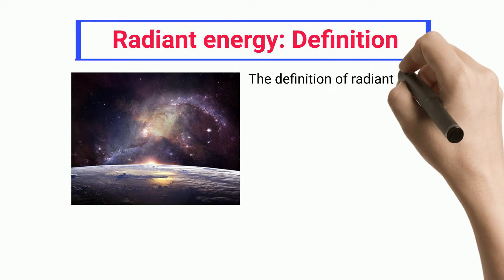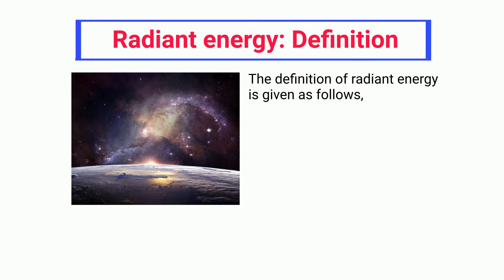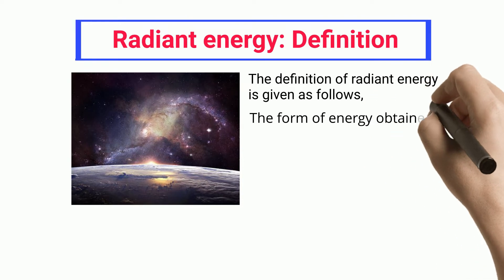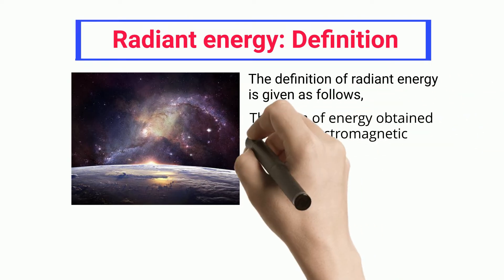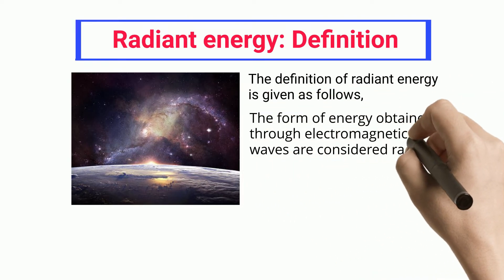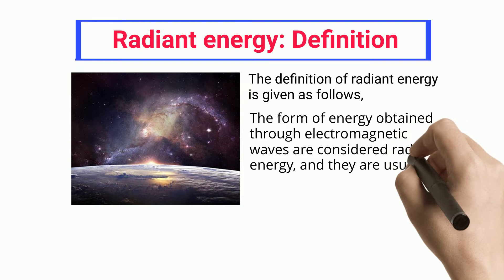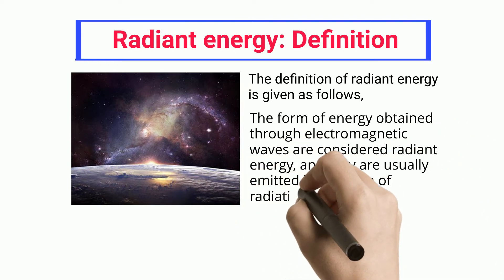The definition of radiant energy is given as follows. The form of energy obtained through electromagnetic waves is considered radiant energy, and they are usually emitted in the form of radiations.